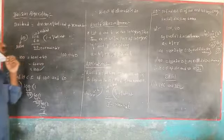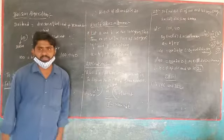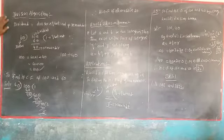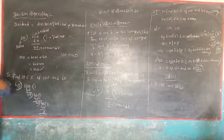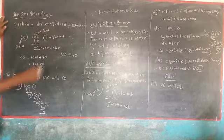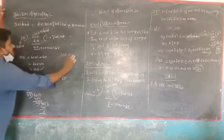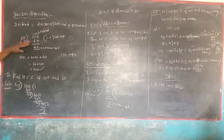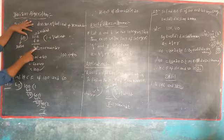Today we are going to learn about the Euclid's Division Lemma. First of all, we know the Division Algorithm, that is: dividend is equal to divisor into quotient plus remainder. For example, 100 divided by 60. So here, 100 you write as dividend, 60 as divisor. 60 goes into 100 once, so remainder will be 40.